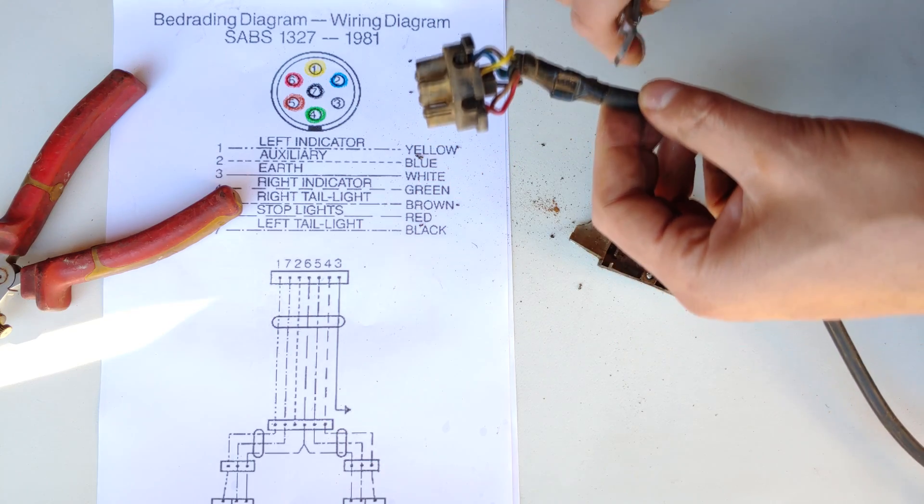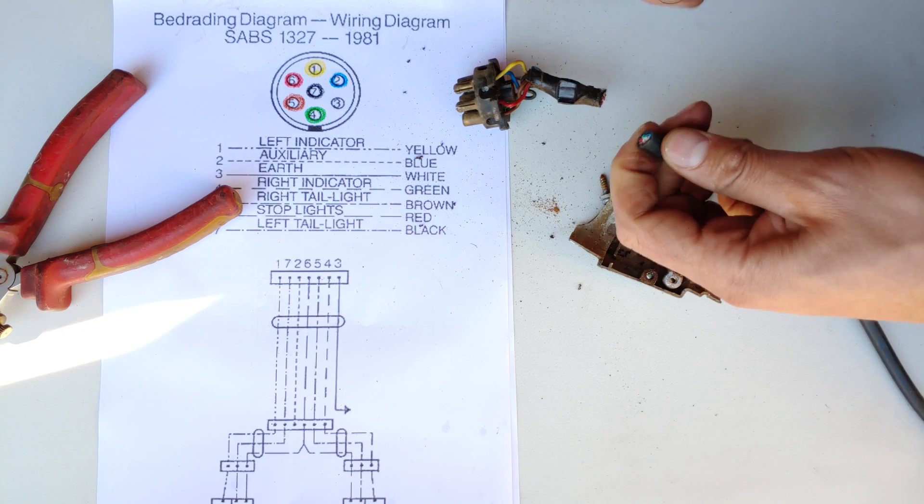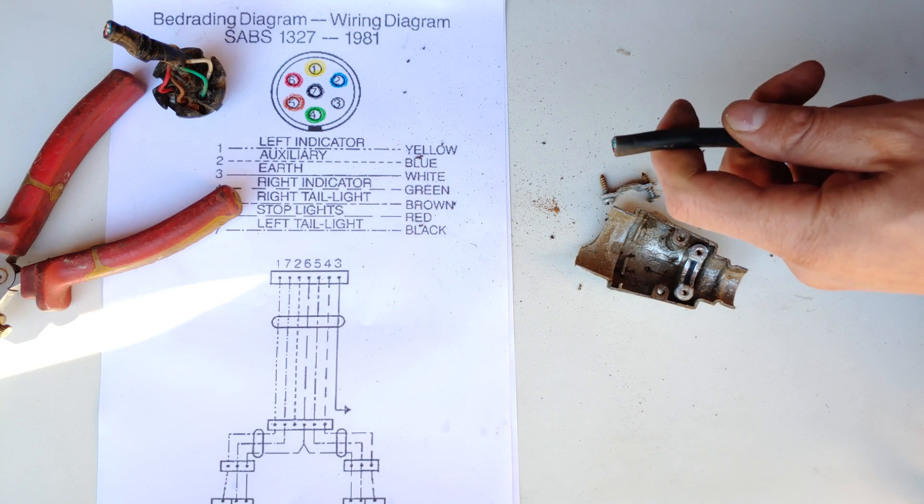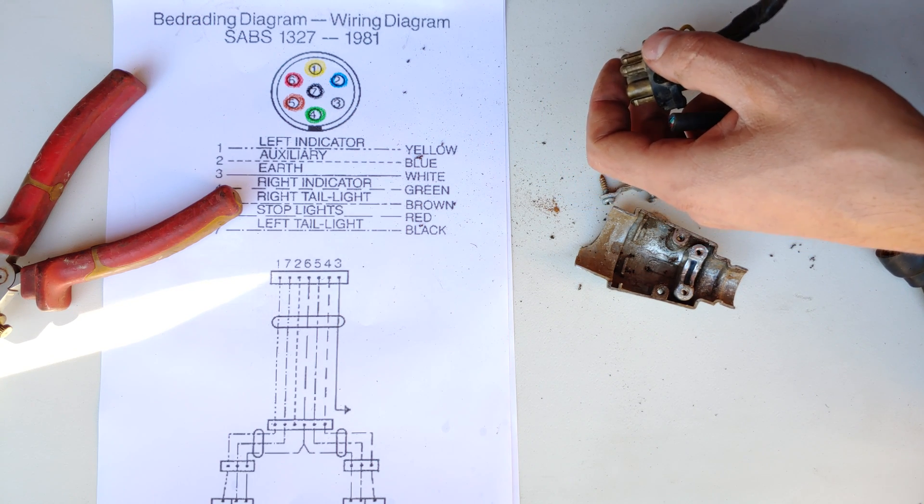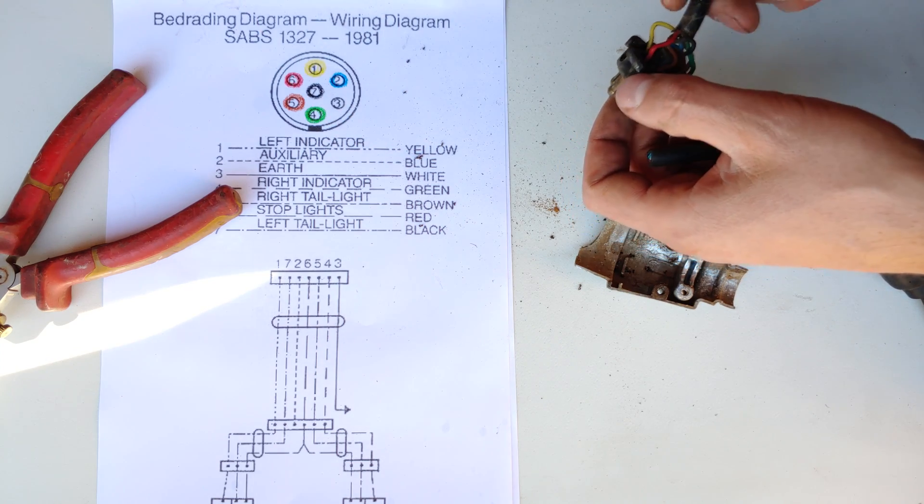If you're wondering what this paper is, wiring a trailer plug is actually wired according to a standard. This happens to be the SABS 1327-1981 standard. This standard is common worldwide for 7-pin trailer plugs.